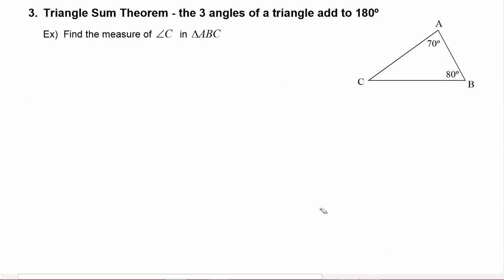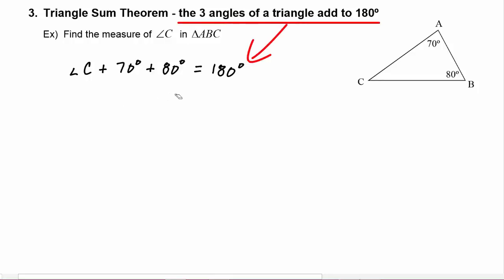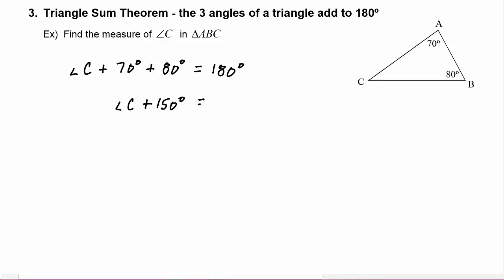Let's take a look at this example where we have to find the measure of angle C in triangle ABC. This will be a direct application of the triangle sum theorem, so we know that angle C plus 70 degrees plus 80 degrees will have to equal 180 degrees, because the three angles of a triangle have to add to be 180. When we combine like terms we get angle C plus 150 degrees is equal to 180. Subtract 150 from both sides and we find out that angle C has to be 30 degrees.